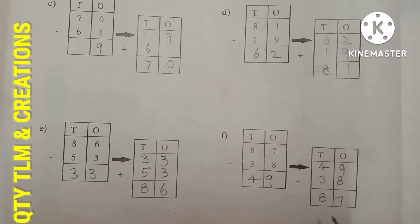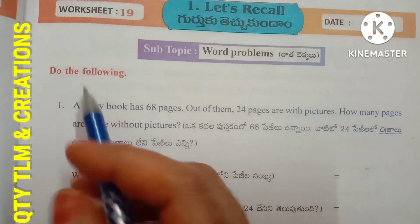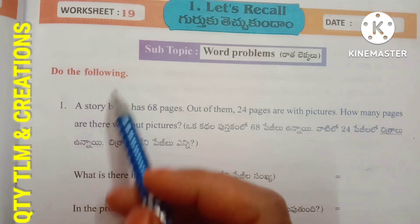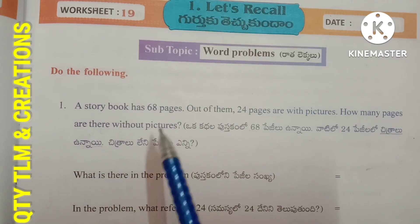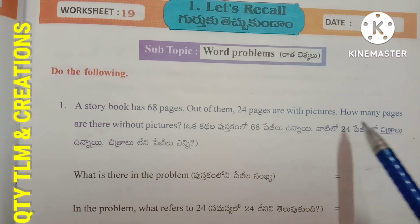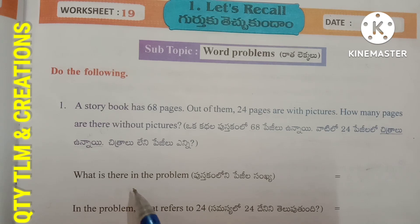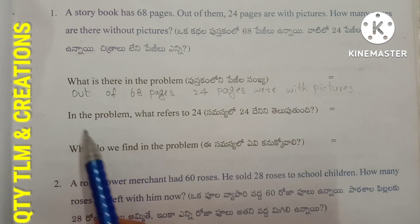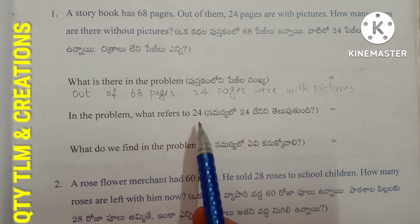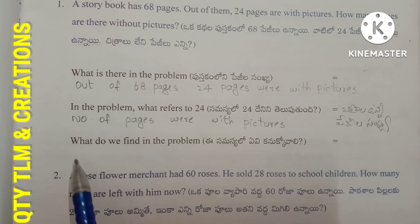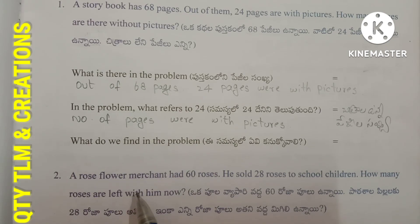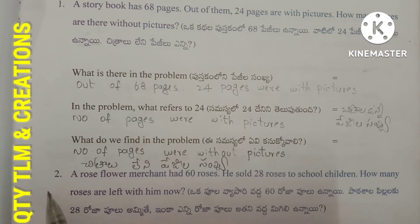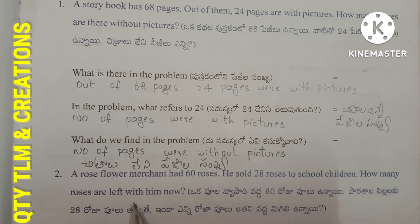Worksheet 19, subtopic: word problems. First question: A story book has 68 pages, out of them 24 pages are with pictures. How many pages are without pictures? Out of 68 pages, 24 are with pictures. We need to find how many pages are without pictures. Second question: A rose flower merchant had 60 roses. He sold 28 roses to school children. How many roses are left? Number of roses with merchant equals 60. Number sold equals 28. Operation: subtraction.